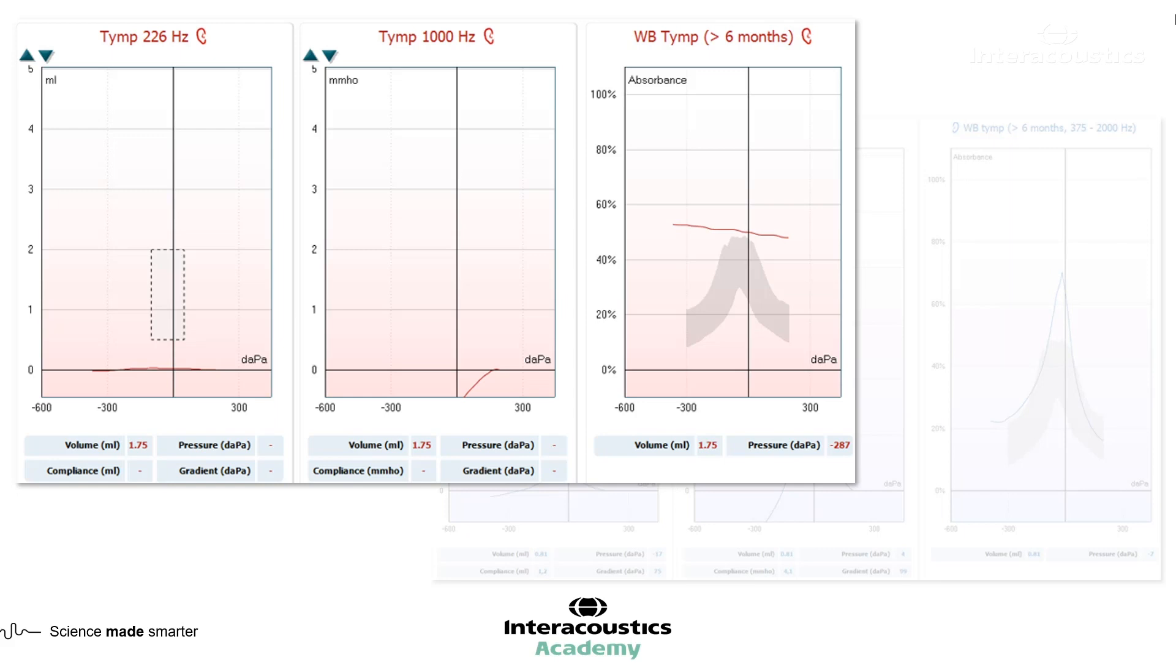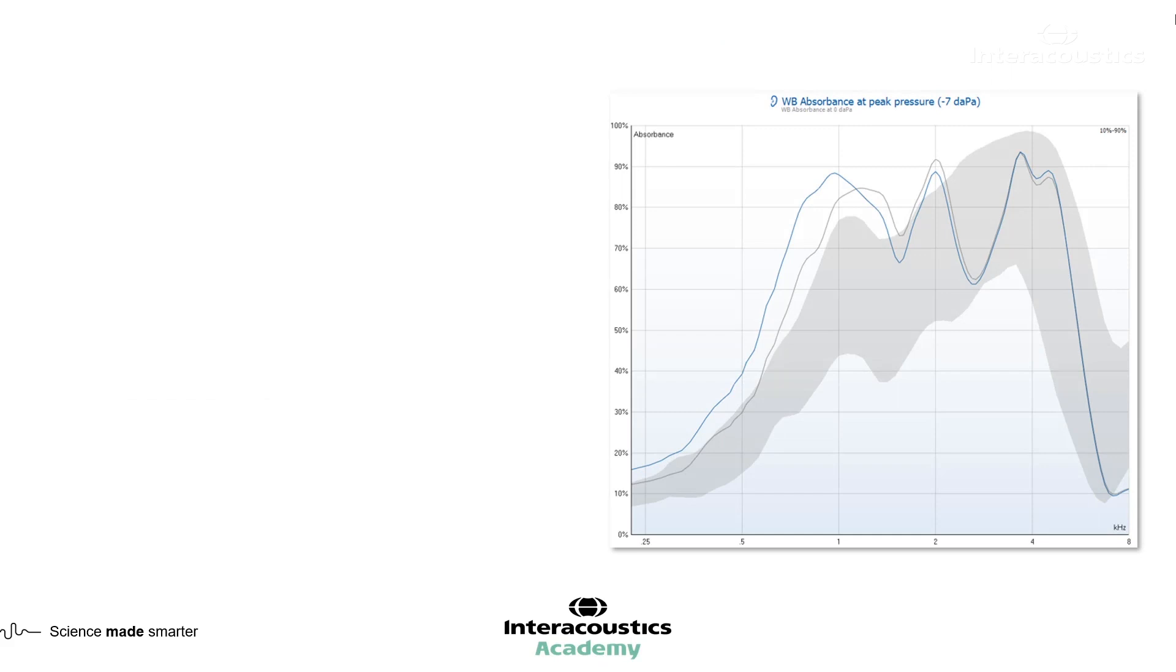Okay, so I guess the next thing we need to look at is our absorbance graph. On the left-hand side, this doesn't look hugely out of the normal range for me, out of the normative curve there, but it is a bit raised around the 1000 hertz region. What would you take from this?